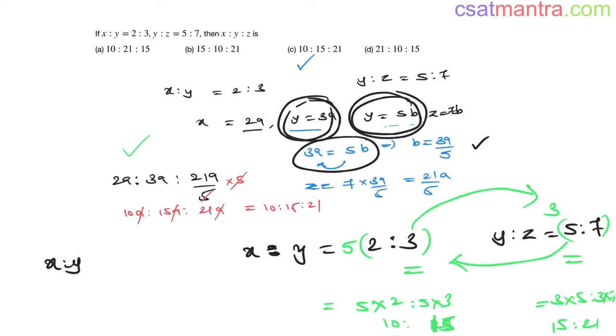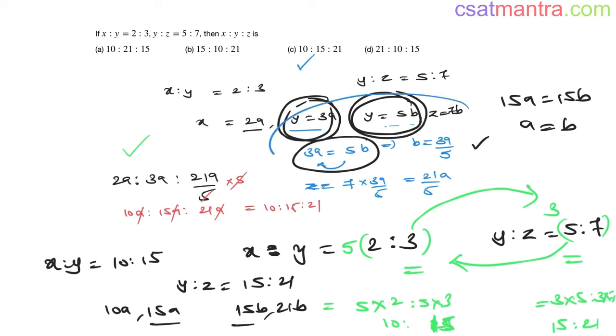Now see, you got x is to y as 10 is to 15, y is to z as 15 is to 21. You can take it as 10A, 15A here, 15B, 21B. y and z, these two should be equal. 15A should be 15B, A is equal to B. Rather than doing like this, you just made A is equal to B. How you can make A is equal to B? By multiplying this y value with this y value, and this y value with this y value. I mean this ratio with this y value, this ratio with this y value. So see, you got 15 here, you got 15 here. So you don't need to deal with ABCs there. Both are equal. So 10 is to 15 is to 21, x is to y is to z. Clear?